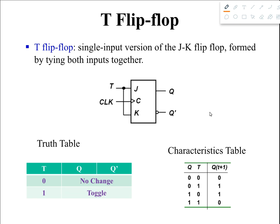Hello everyone. In this tutorial we're going to learn about the T flip-flop. The T flip-flop is basically the single-input version of the JK flip-flop, formed by tying both inputs together. That means we're going to short J and K — the inputs of J and K will be shorted together — and it will produce the T flip-flop, just like the diagram shown here. Both inputs J and K are tied together, producing a new input known as T.